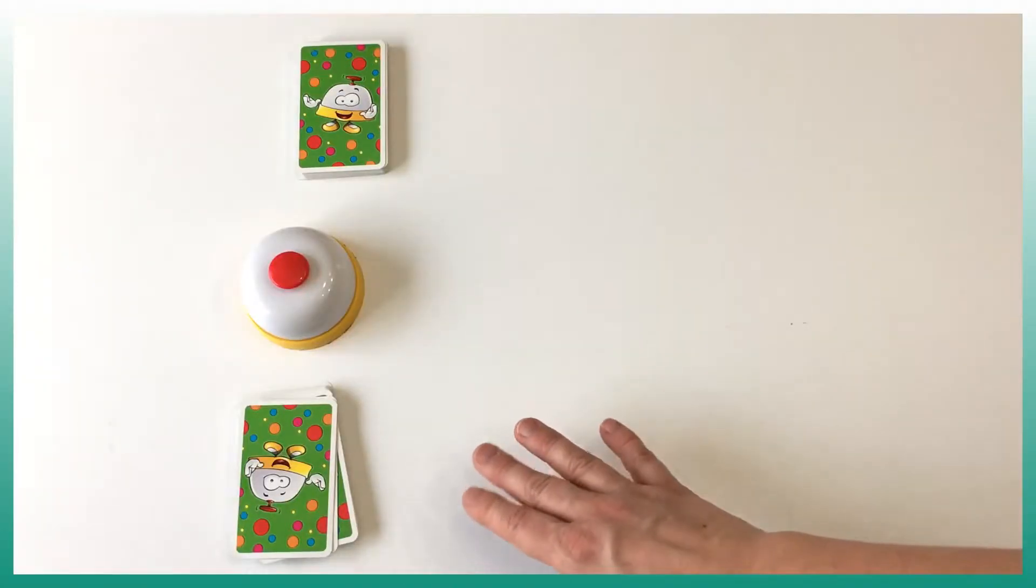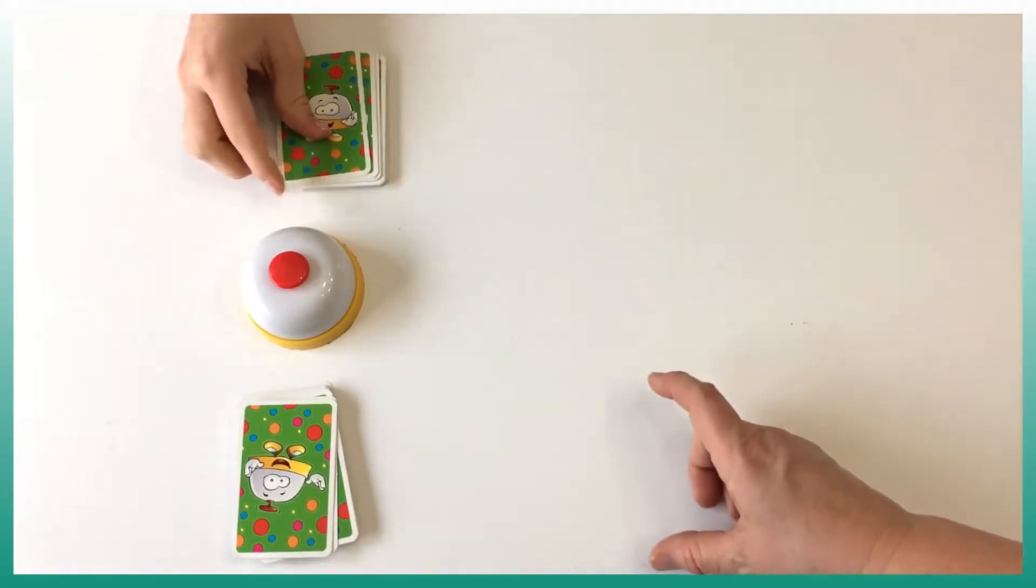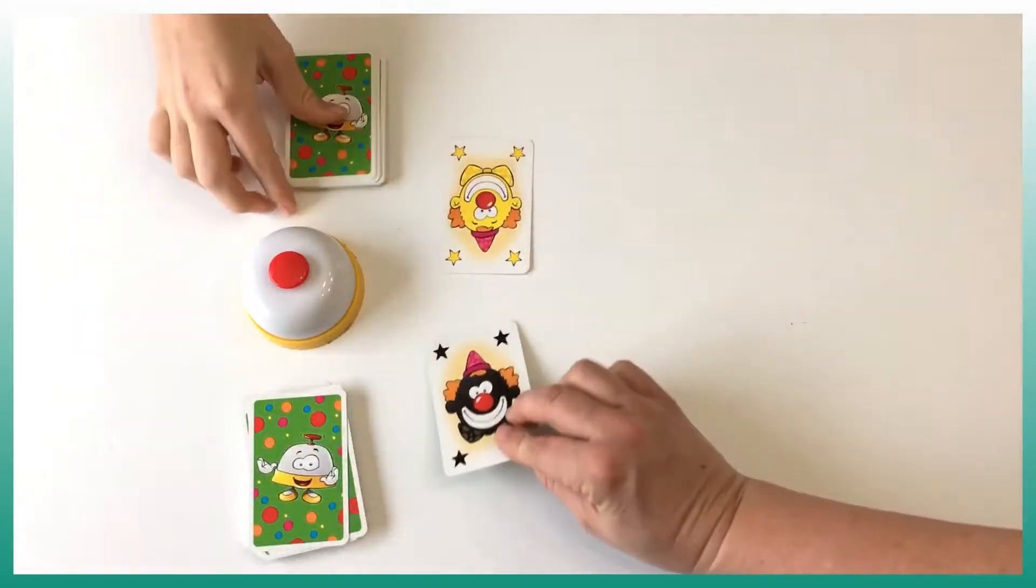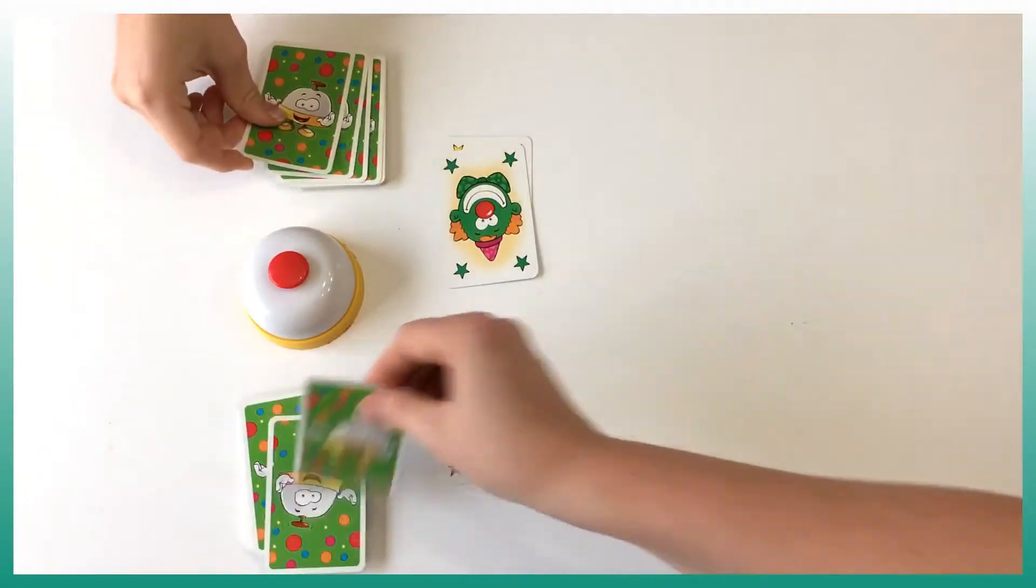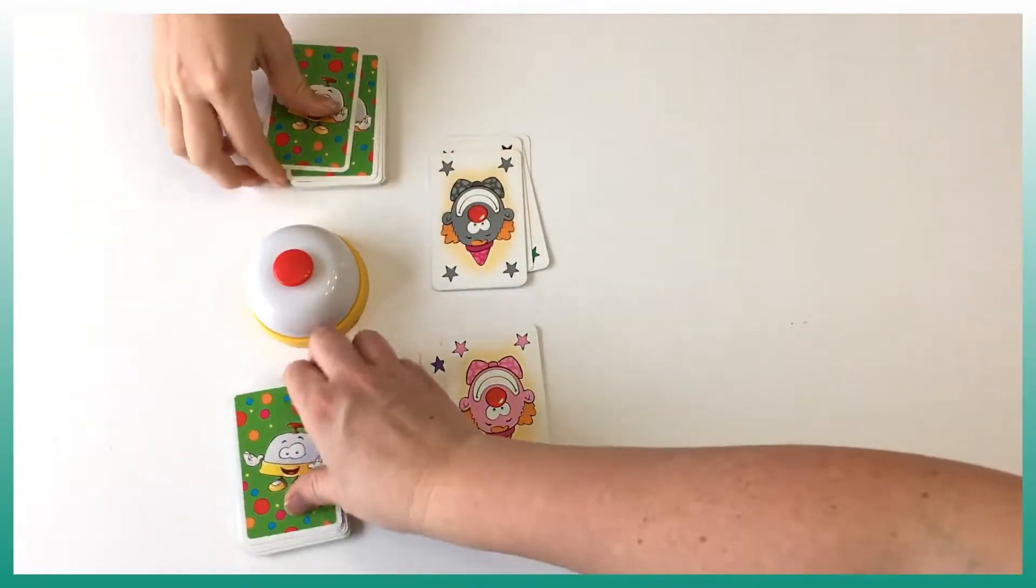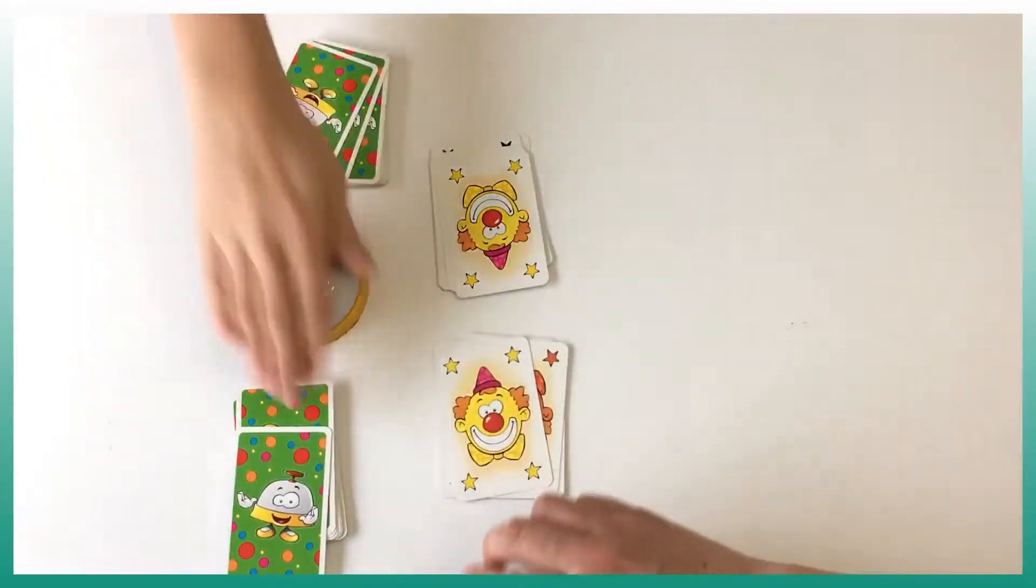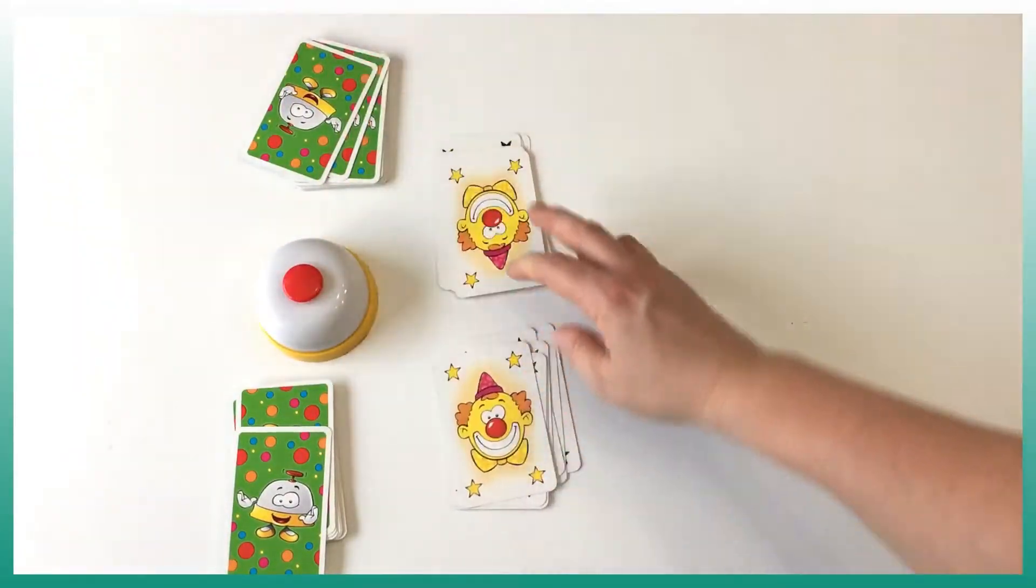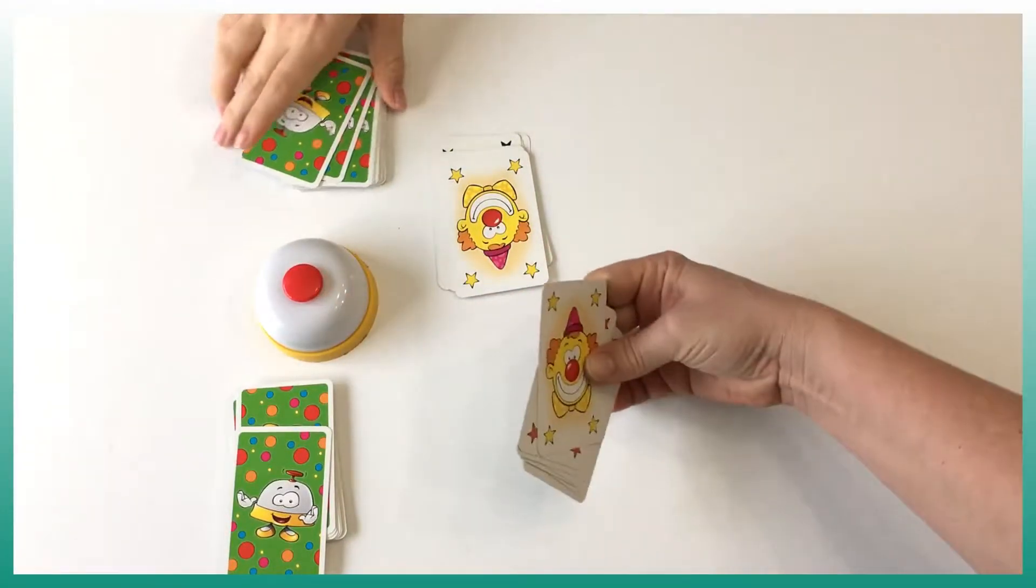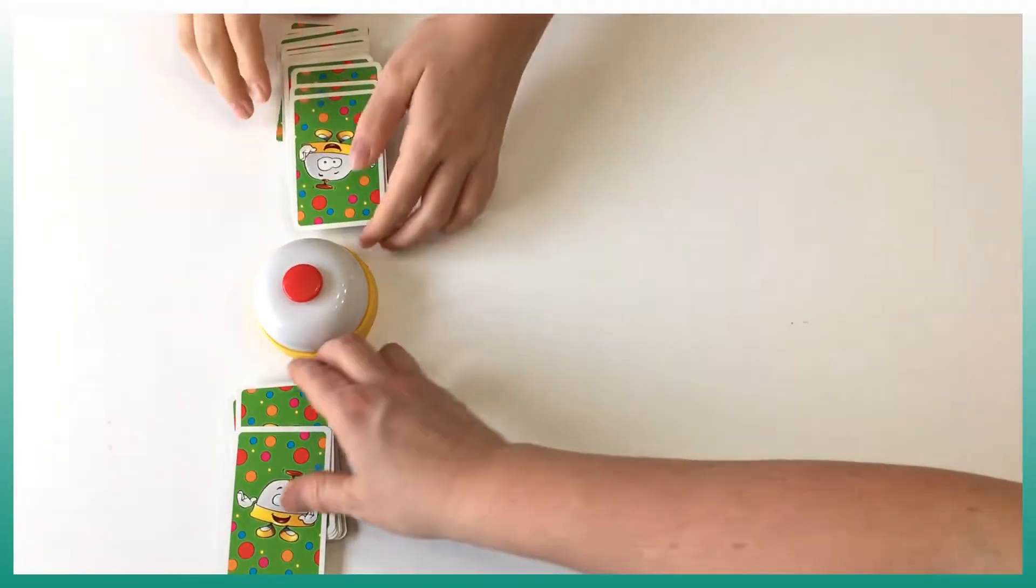Now that we have separated the deck equally, we're gonna turn the card one at a time and try to get the clown of the same color with the hat and the smile. So now that we get the two colors, she rang the bell really quickly and now she wins all the cards that we have here. She can put it under her deck and then we continue.